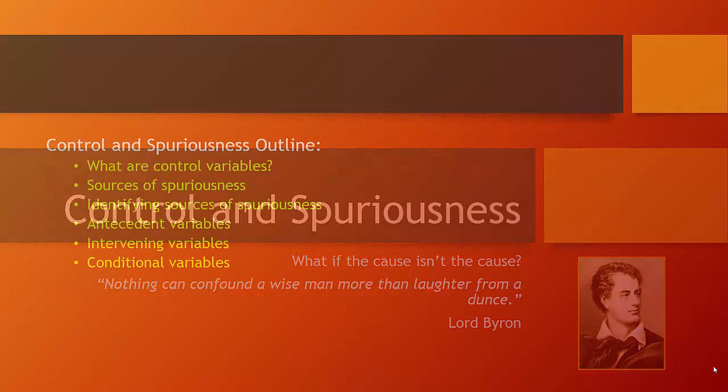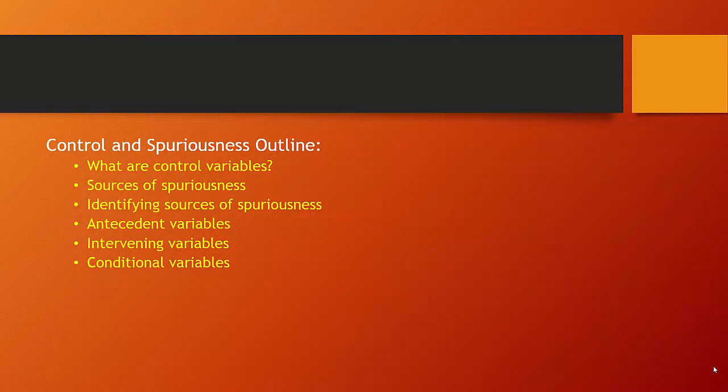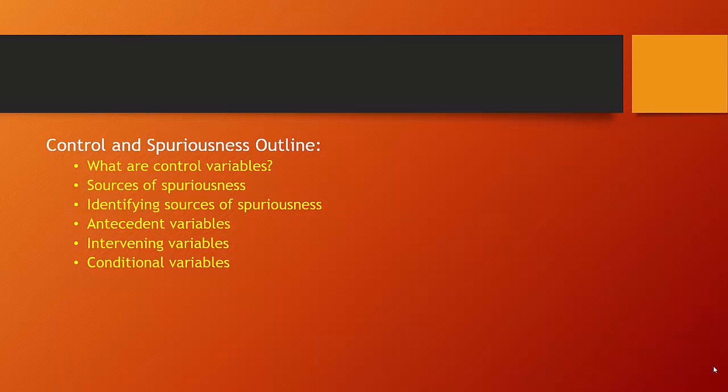So here's what we're going to cover today. We're going to look at what control variables are, consider sources of spuriousness, identify possible sources of spuriousness, then look at antecedent variables, intervening variables, and conditional variables.